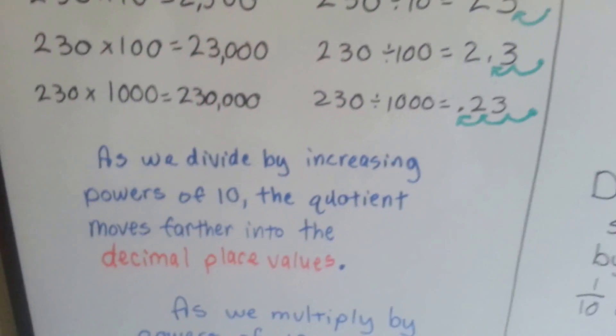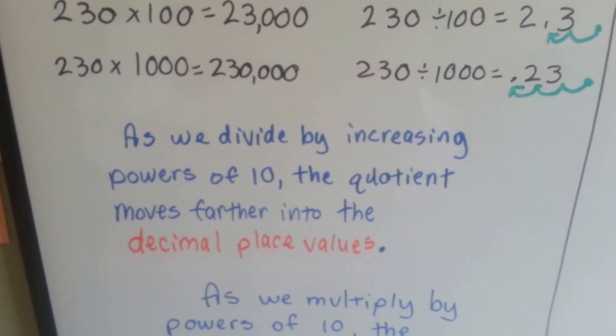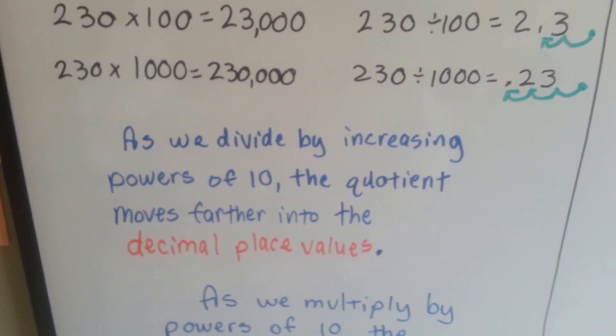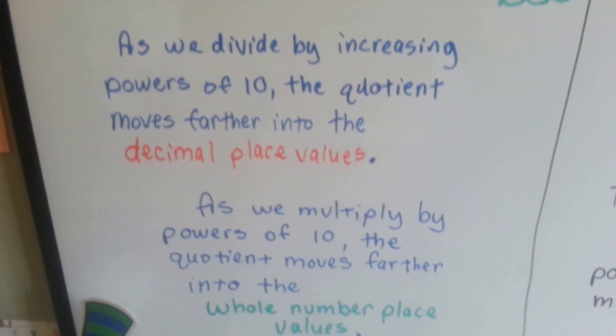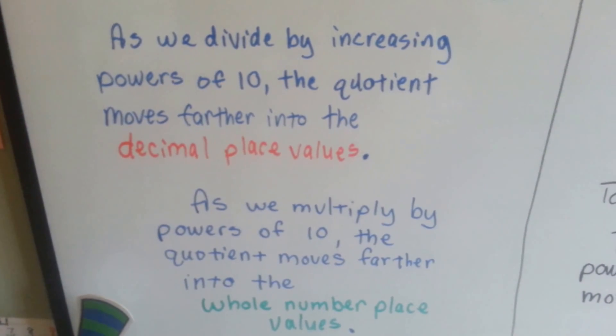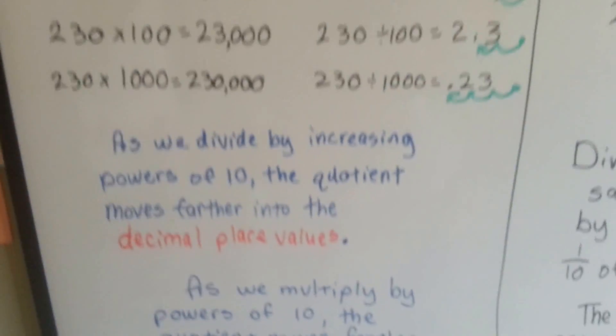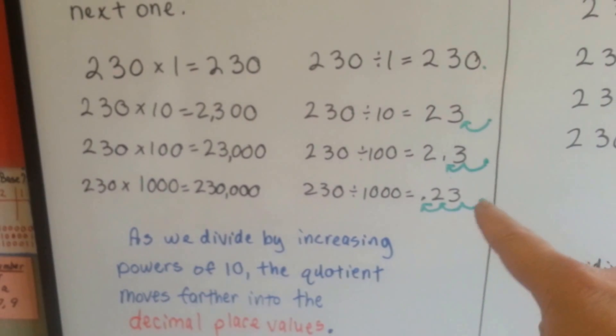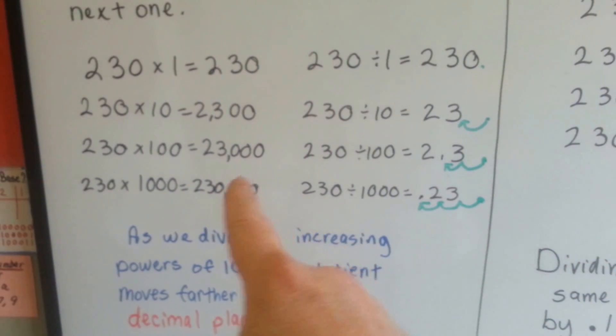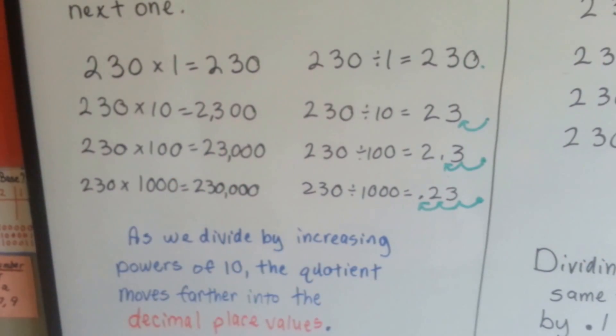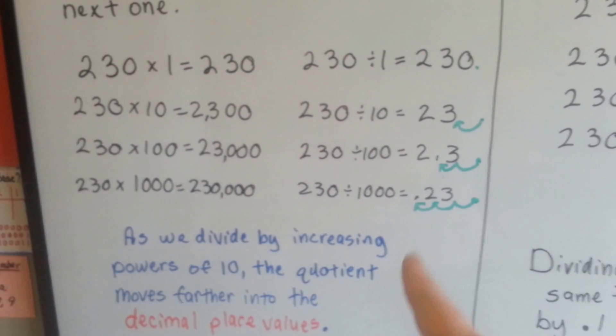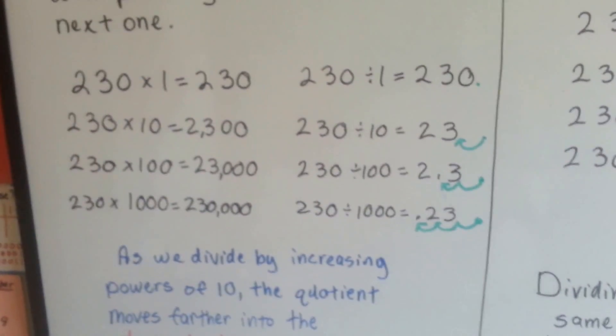As we divide by increasing powers of 10, the quotient moves farther into the decimal place values, doesn't it? As we multiply by powers of 10, the quotient moves farther into the whole numbers place value. So here it was moving farther into the place values, and here it was moving farther into the whole numbers, right? Getting bigger and bigger whole numbers, getting bigger and bigger decimal numbers.